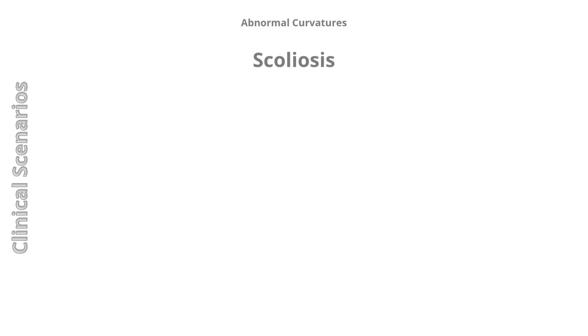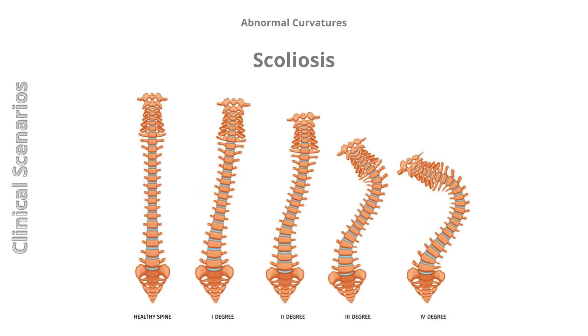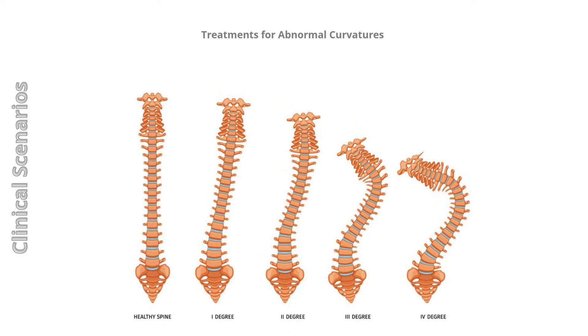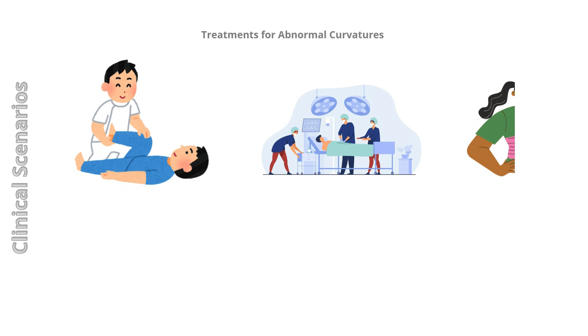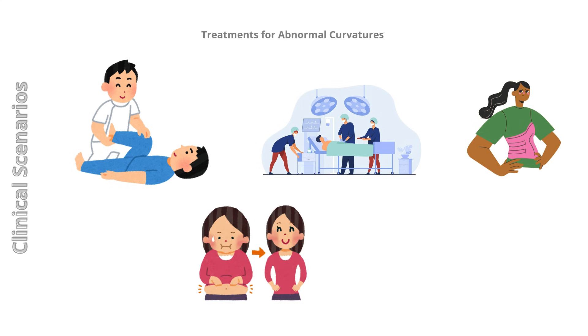Scoliosis: characterized by an abnormal lateral curvature accompanied by vertebral rotation. Causes include asymmetrical muscle weakness, malformation of vertebrae, or differences in limb length. Treatment for abnormal curvatures varies based on the cause and may include physical therapy, surgical fusion, bracing, weight loss, and exercise.